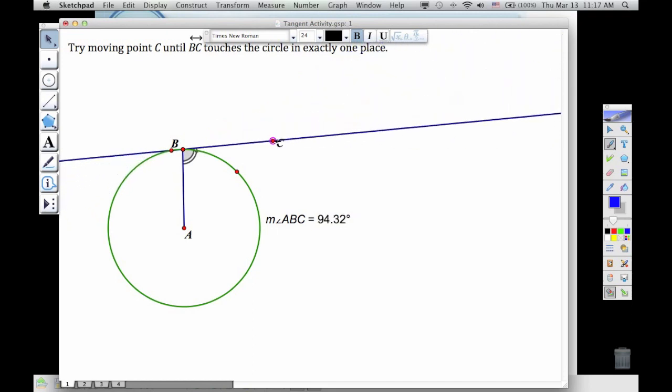Or if I come back, it's not touching twice. So if we look at the angle that it's forming, it's going to be at a 90 degree angle where I'm only touching once.